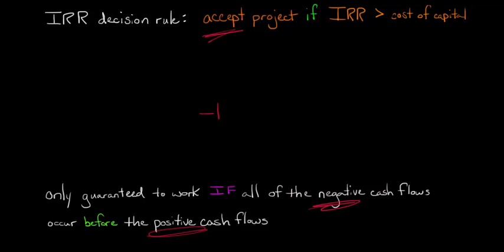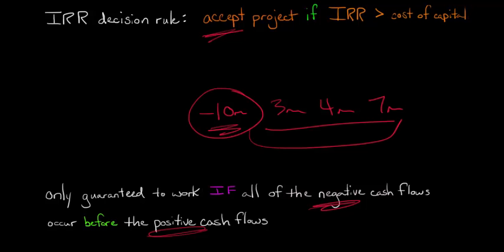So if the negative cash flows happen first — for example, negative $10 million, then $3 million, then $4 million, then $7 million — if the negative cash flows come up front and then are followed by positive cash flows, then you can use IRR. If that isn't the case, if the negative cash flow comes later or there's some kind of issue, then you might not be able to use IRR and it might break down.